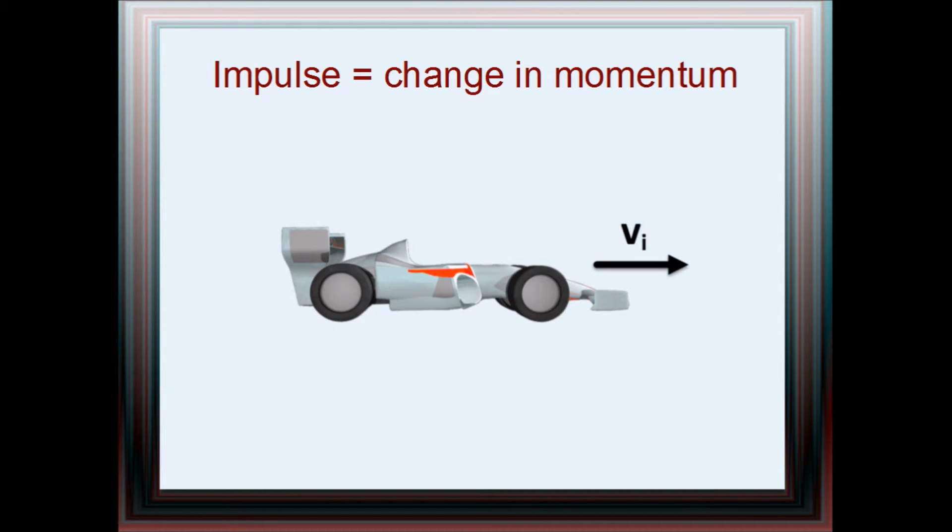How do you change the momentum of a car? You go faster. Because momentum is mass times velocity, an increase in velocity corresponds to an increase in momentum. The final minus initial momentum gives you the impulse that acts.